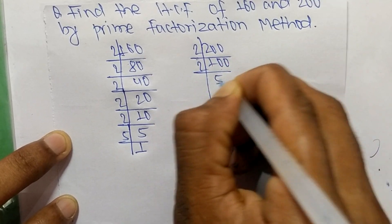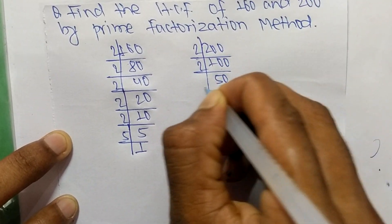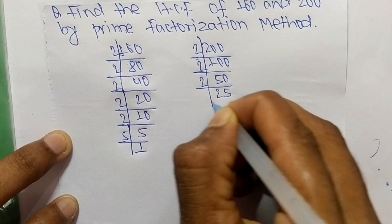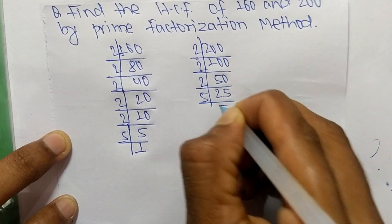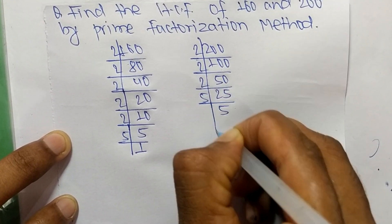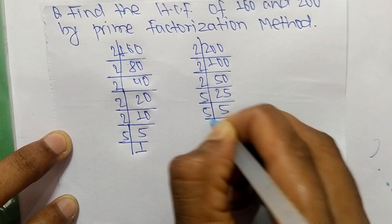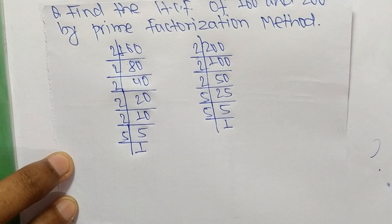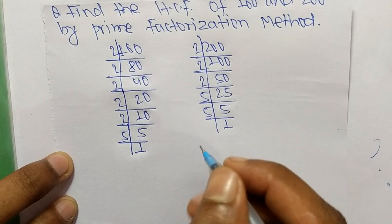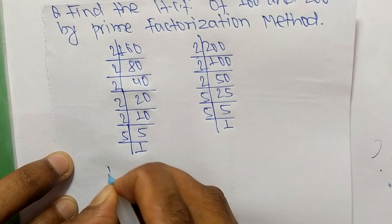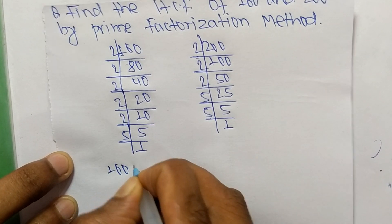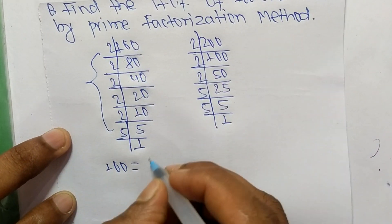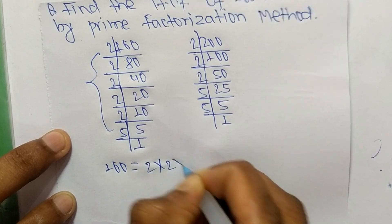2 times 50 means 100, 2 times 25 means 50, 5 times 5 means 25, and 5 times 1 means 5. So from these prime factors we can write: 160 is equal to 2 times 2 times 2 times 2 times 2 times 5.